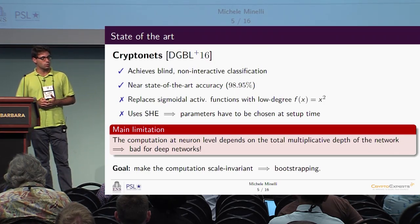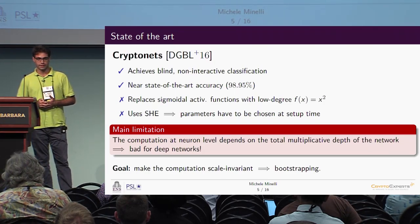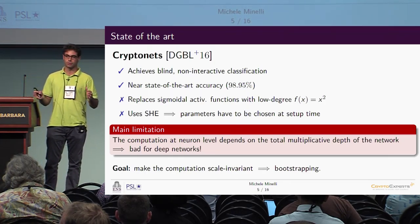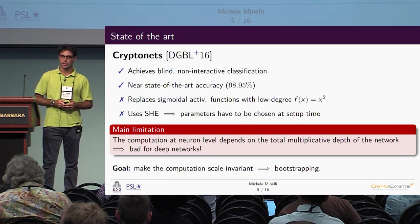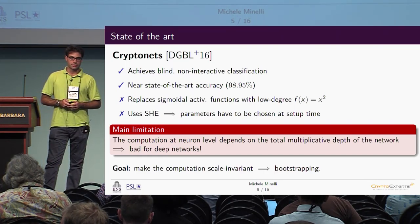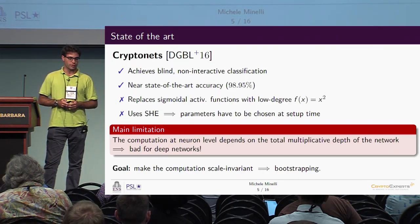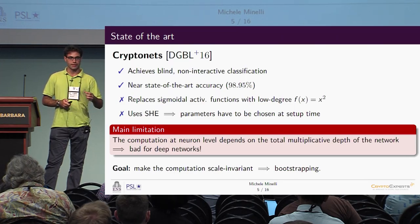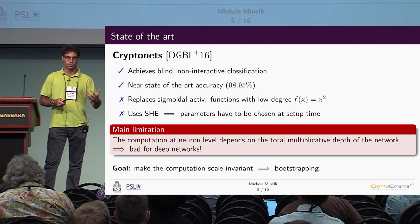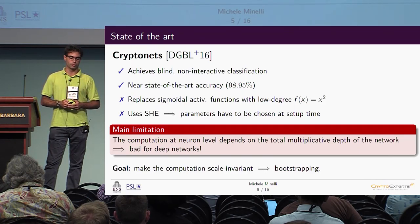Instead, in this work we want to make the computation scale-invariant, meaning that what happens at the neuron level does not depend on how big the total network is. In order to achieve this result, we rely on bootstrapping — a technique to refresh the ciphertext so it can support more computations.